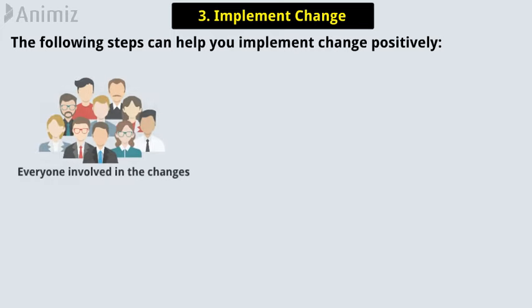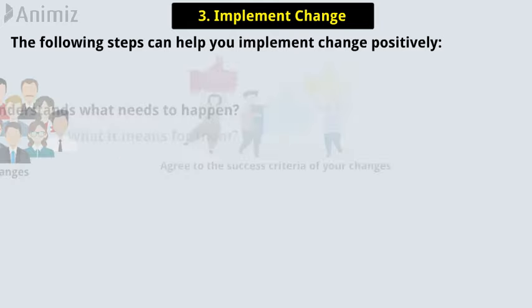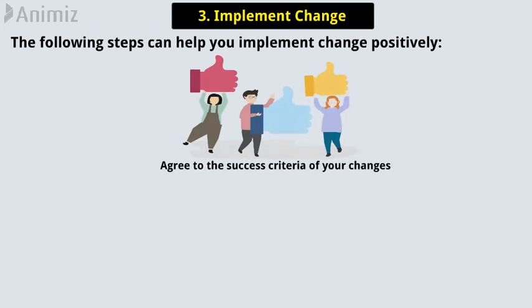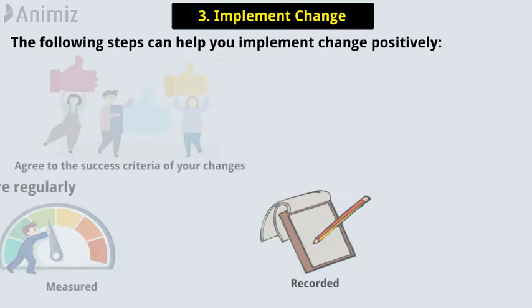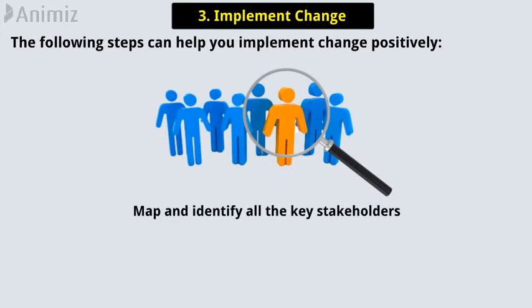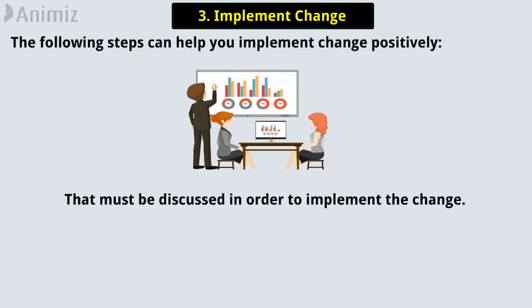The following steps can help you implement change positively. Ensure that everyone involved in the changes understands what needs to happen and what it means for them. Agree to the success criteria of your changes, and make sure that they're regularly measured and recorded. Map and identify all the key stakeholders that will be involved in the change. Identify any training needs that must be addressed in order to implement the change.